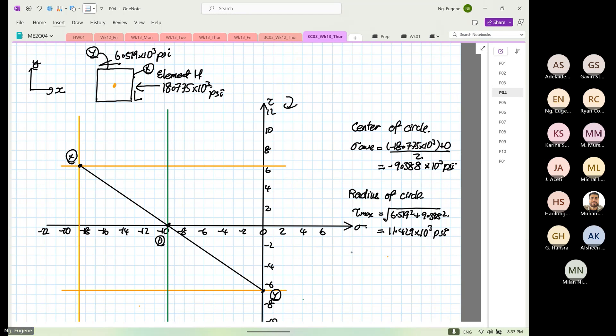So from here we can calculate our principal stress. So minus 9.388 times 10 to the power 3, plus or minus 11.429 times 10 to the power 3. So this will be equal to minus 9.388 plus by 11.429 is equal to 2.041 positive times 10 to the power 3 psi. And then the next one, minus 20.817 times 10 to the power 3 psi.